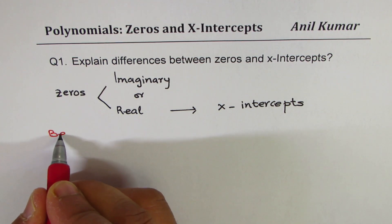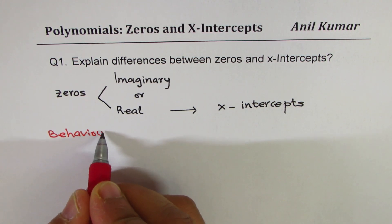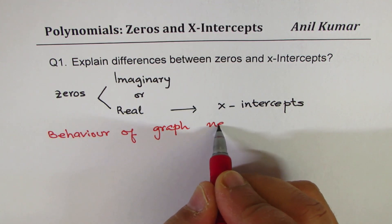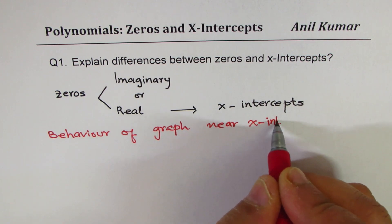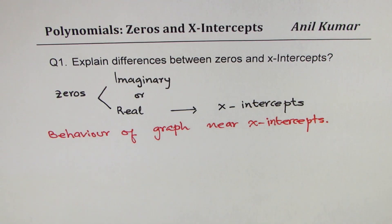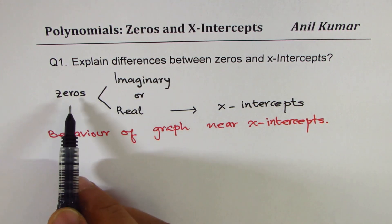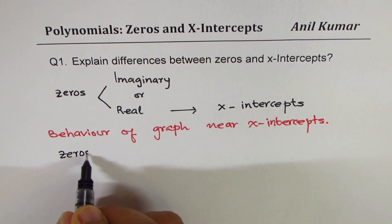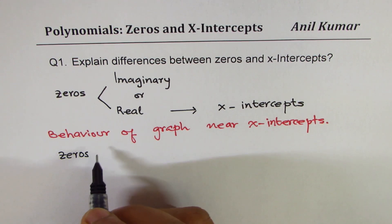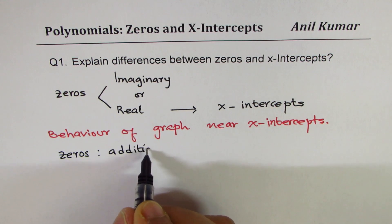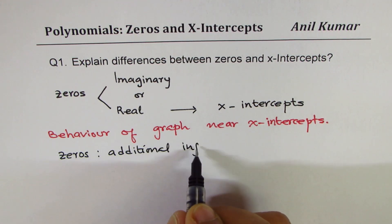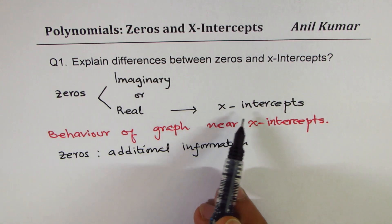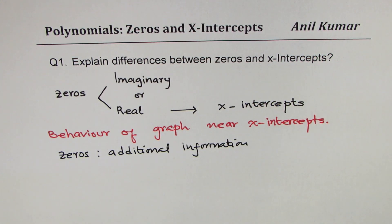The something more is related to the behavior of the graph near x-intercepts. This is a very important concept — zeros also provide us with some additional information. Let's look into what kind of information zeros provide which is missing from x-intercepts.